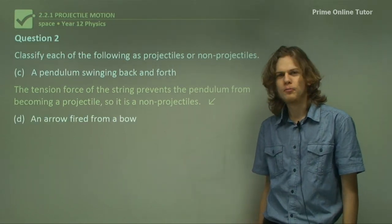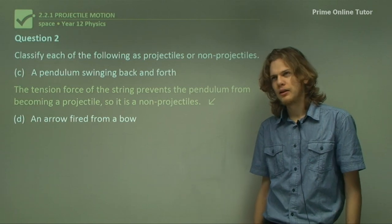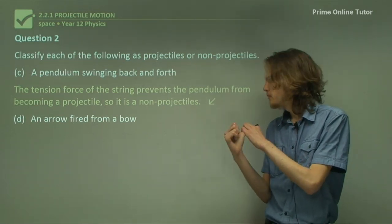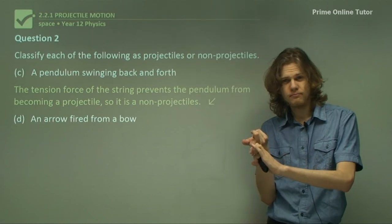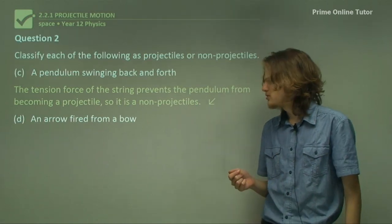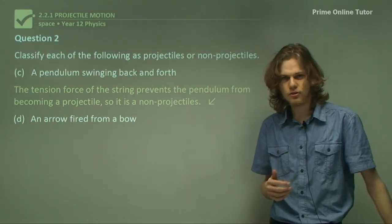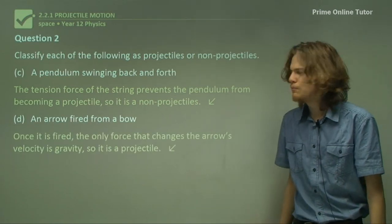Finally, D: an arrow fired from a bow. Now let's see, that's got gravity acting on it, it's in mid-air, it doesn't have any tension force or thrust, so it must be a projectile.